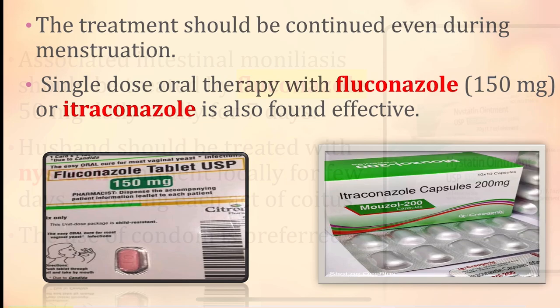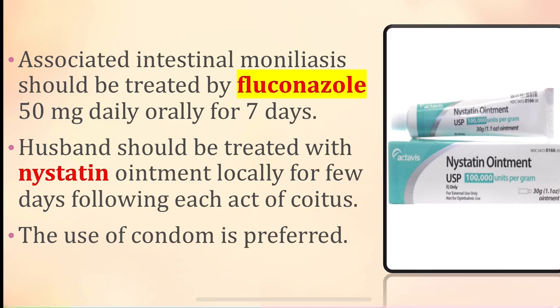Treatment should be continued even during menstruation. A single dose oral therapy with fluconazole 150 mg or itraconazole is found effective. For associated intestinal moniliasis, fluconazole 50 mg daily orally for seven days is given. The husband should also be treated with nystatin ointment locally for a few days following each act of coitus, and the use of condoms should be preferred.